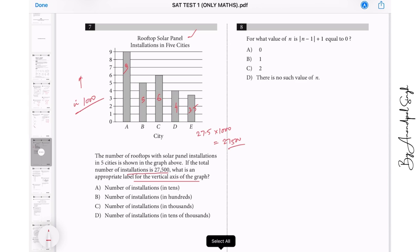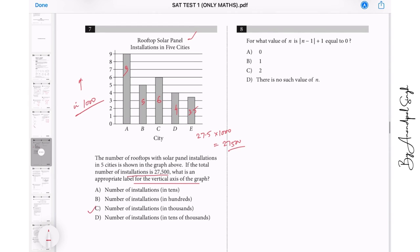So he's saying that total are 27,500, it means that when I multiply this by 1000, I should get 27,500 and this scale should be in thousands. So it should be in thousands, it means C should be the right answer. For what value of n is this equal to zero? Now see, observe here that absolute value of n minus one is always positive or equal to zero, and when I add plus one to both sides, it means that it will always be more than or equal to one.